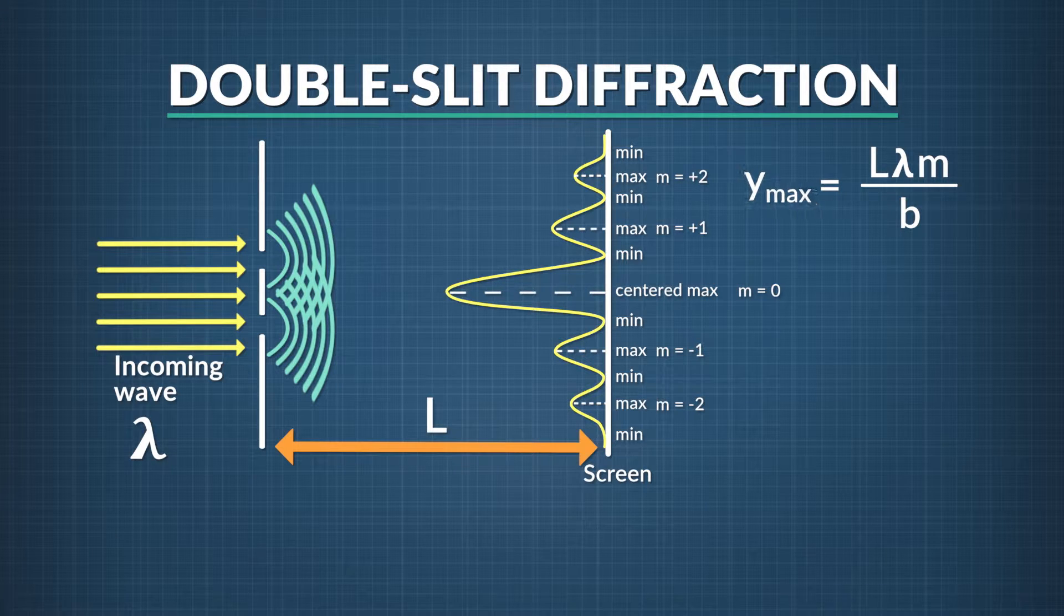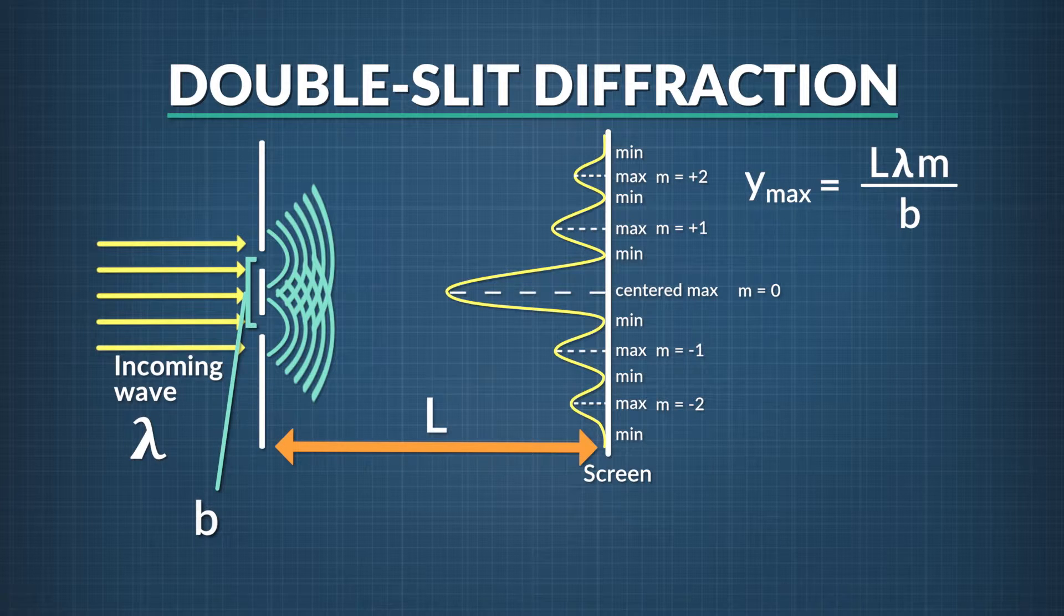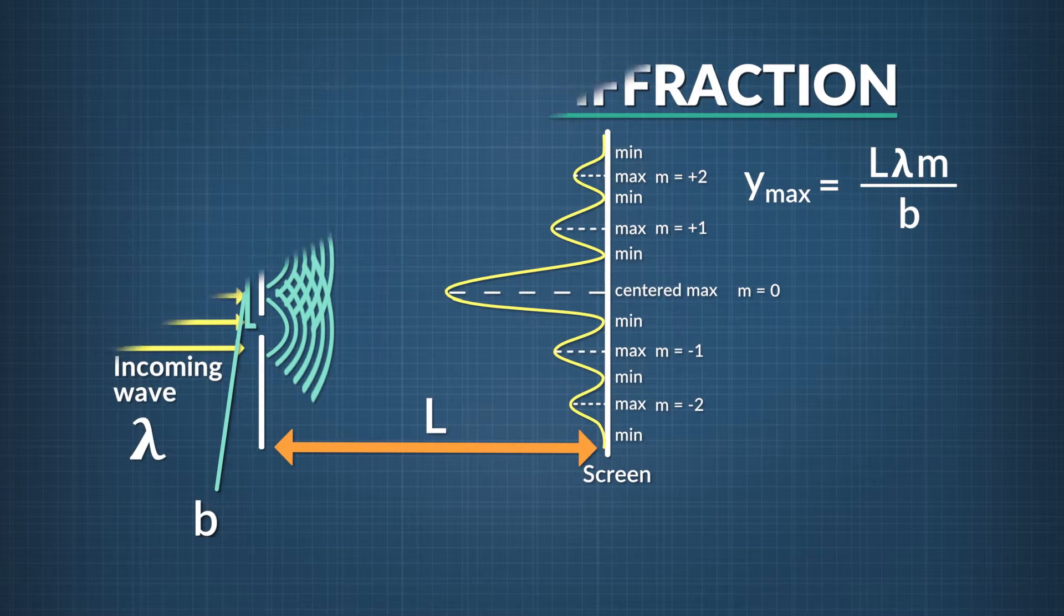Y_max equals L times lambda times m divided by b. All the variables in this equation are the same as those in the single slit equation, except for b, which is the distance between the two slits. We'll use both the single and double slit relationships to study wave effects in action.